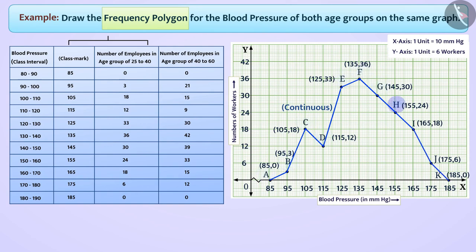which gives us frequency polygon A, B, C, D, E, F, G, H, I, J, K, which represents the number of workers in age group 25 to 40 and their blood pressures. To represent that this polygon is made up of continuous line segments, which represents the number of workers in age group 25 to 40, we will write symbol like this.